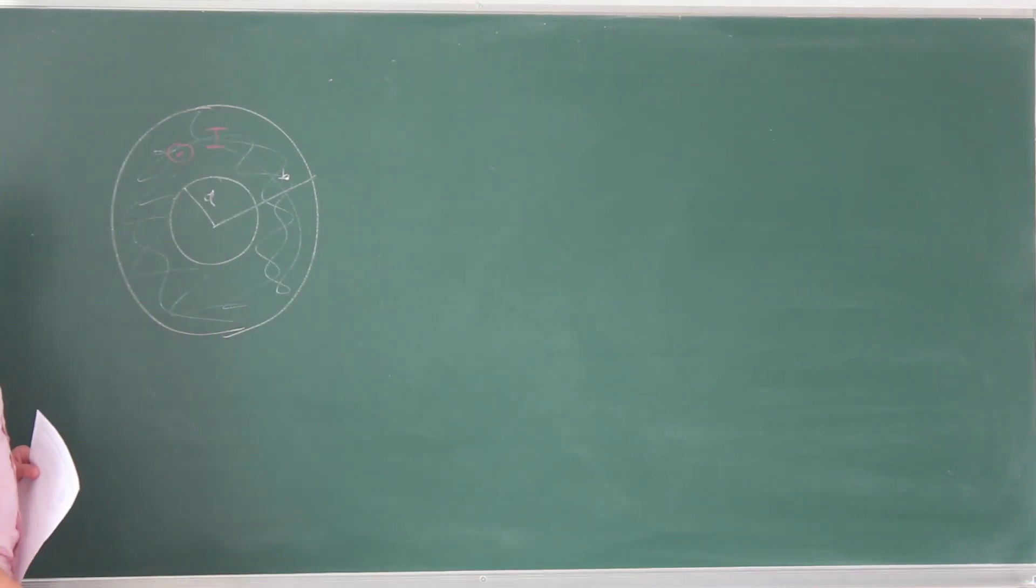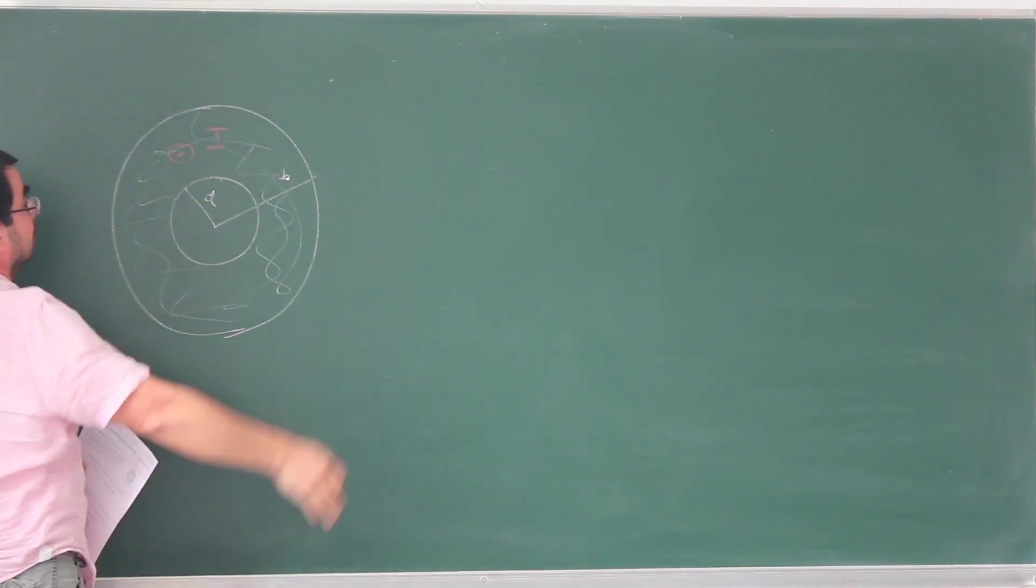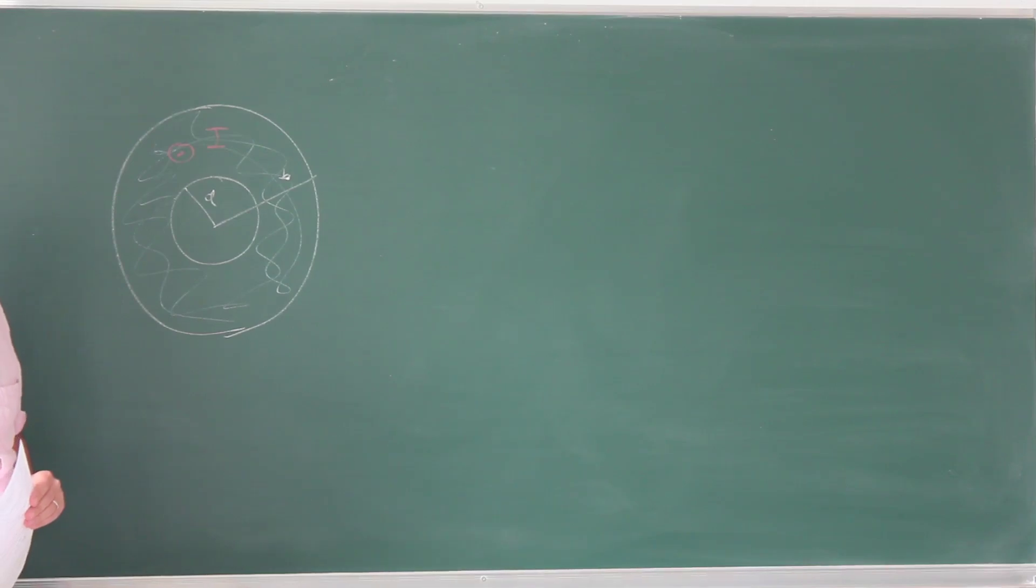And they are asking for the magnetic field due to this configuration within this small inner radius A, between A and B, and then outside of B. So this is part A, B, and C, but there are some arguments that's equally applicable to all parts.